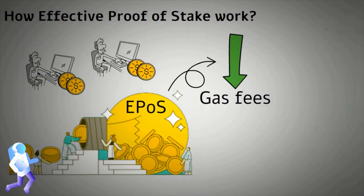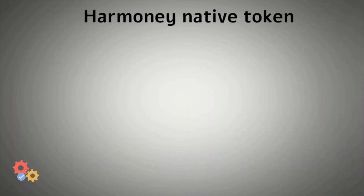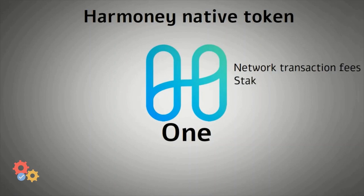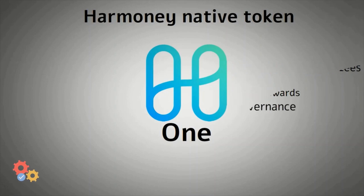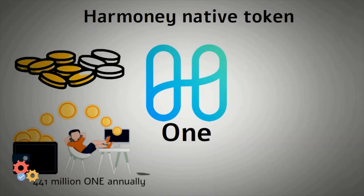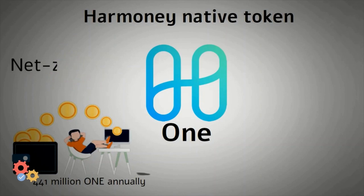Although we are yet to see how the new Ethereum 2.0 handles fees. Looking into Harmony's native token called ONE — the Harmony protocol's native token, ONE, is used for paying network transaction fees, staking as a delegator or validator in return for block rewards, and taking part in Harmony's open governance mechanism. Harmony provides a constant reward to validators of 441 million ONE annually. Transaction fees are burned with an end goal of creating a net-zero state, offsetting the ONE provided for block rewards.